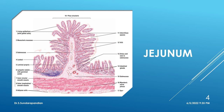The crypts of Lieberkühn are present in the lamina propria in duodenum as well, but what is in the submucosa of duodenum is Brunner's glands — that is different. The cells lining the crypts of Lieberkühn include goblet cells, enteroendocrine cells, and Paneth cells. These cells are present in the intestinal glands.